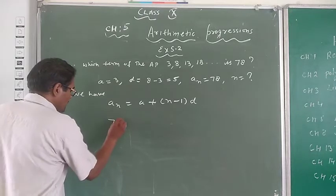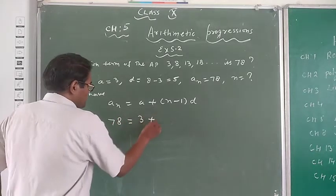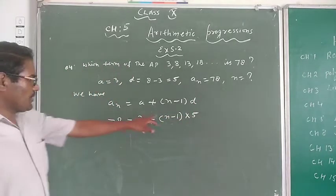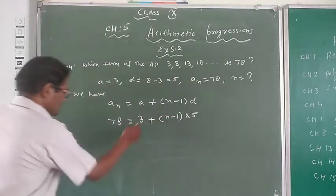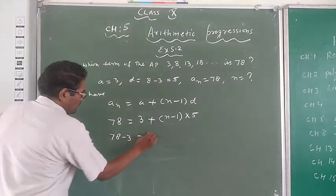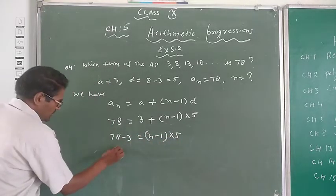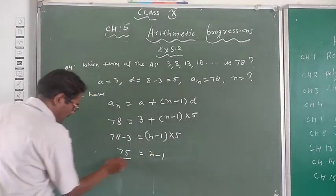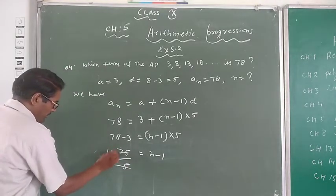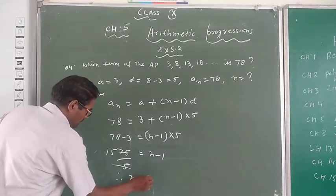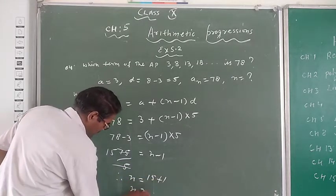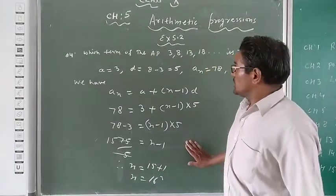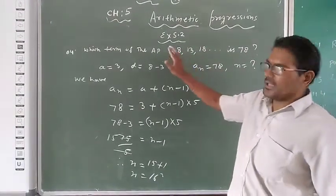So an is 78, a is 3, and difference is 5. Now 78 equals 3 plus n minus 1 into 5. 78 minus 3 equals n minus 1 into 5. This is 75 equals n minus 1 times 5. If we divide, 75 divided by 5 equals 15. Therefore n equals 15 plus 1, n equals 16. That is, the number of terms are 16. 78 is the 16th term.